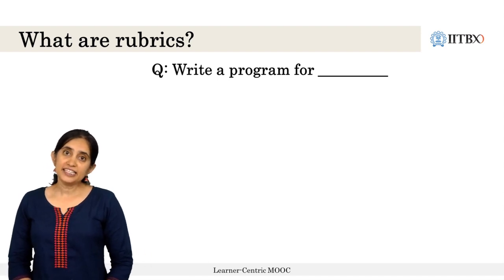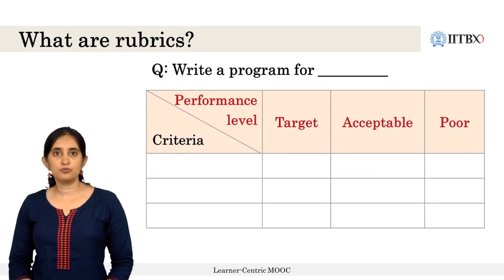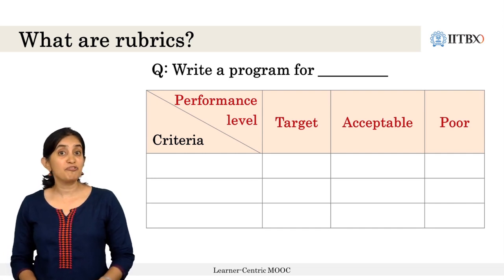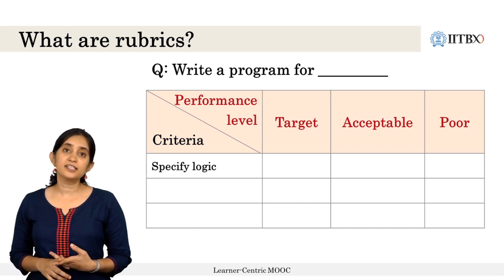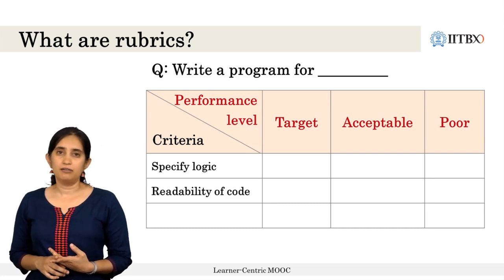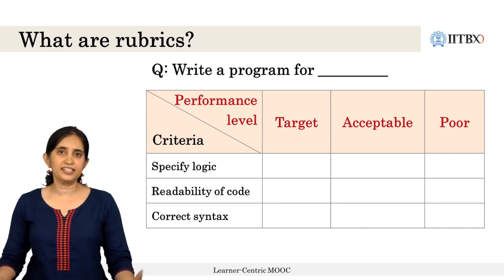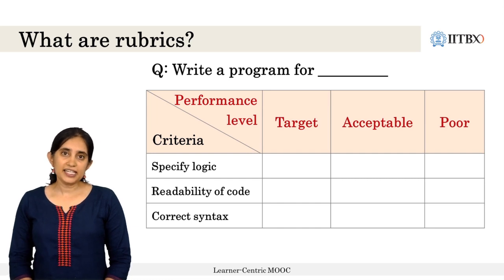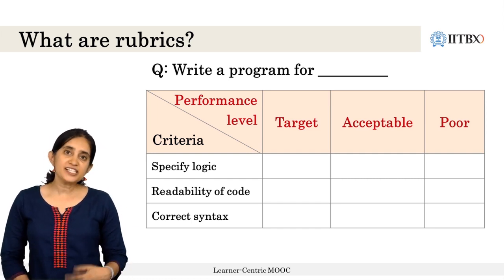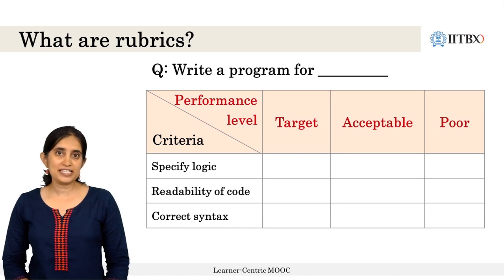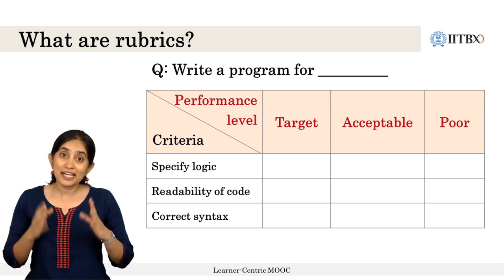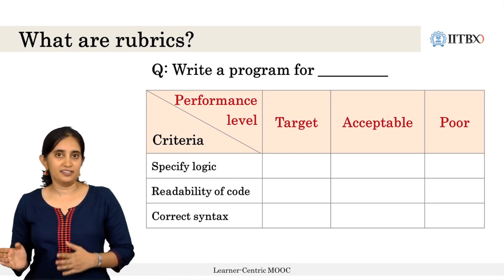The important criteria that may be used to assess and give feedback on such a question is whether the learner has specified appropriate logic, whether the code is readable, the correctness of syntax, and so on. There may be other criteria that some of you may think of. In order to write levels, what can be done is to go through criteria one by one and first decide what is the target performance level, then consider the major issues that make up the target performance, and then write the other levels.